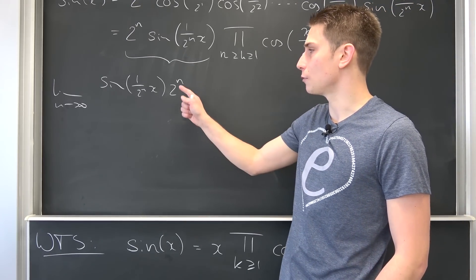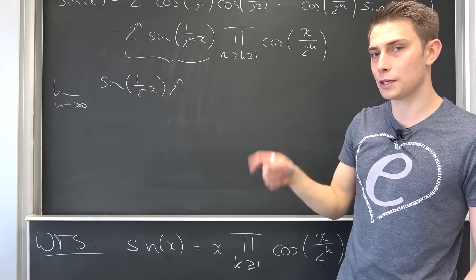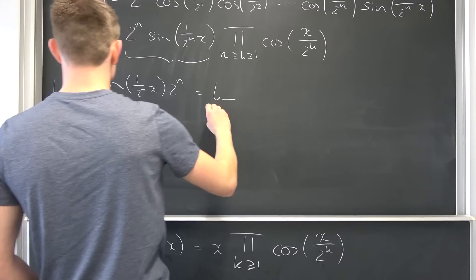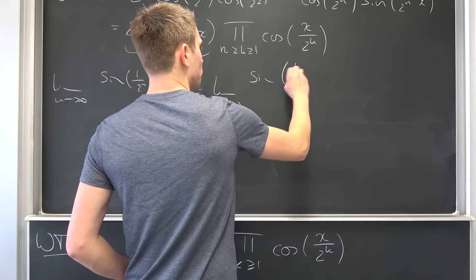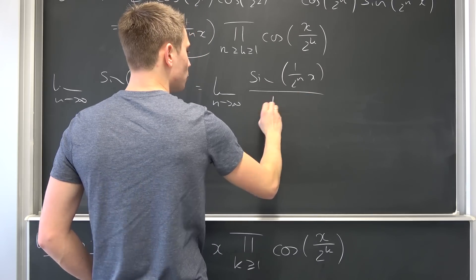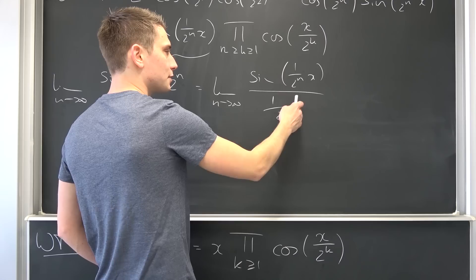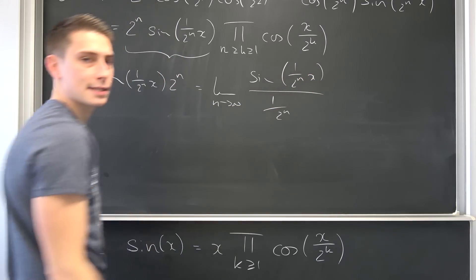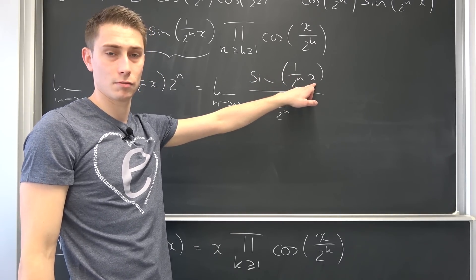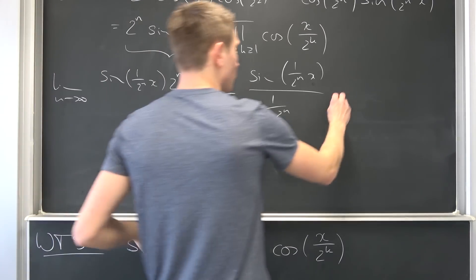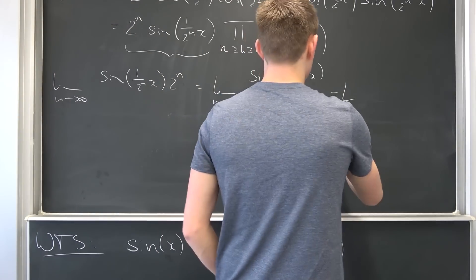Thing is, if we let n go to infinity, then this also goes to infinity. I would like to rewrite this a little bit because this is the same as saying this is the limit as n approaches infinity of sine of 1 over 2 to the nth power times x over 1 over 2 to the nth power. I'm doing this on purpose simply because now we have the same argument but with x up here, and this is a famous limit. This is basically going to be just 1 times this other part of the argument.